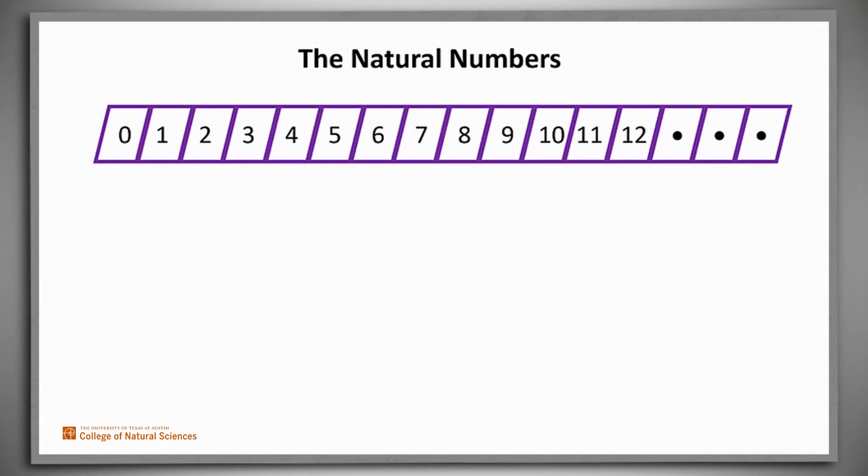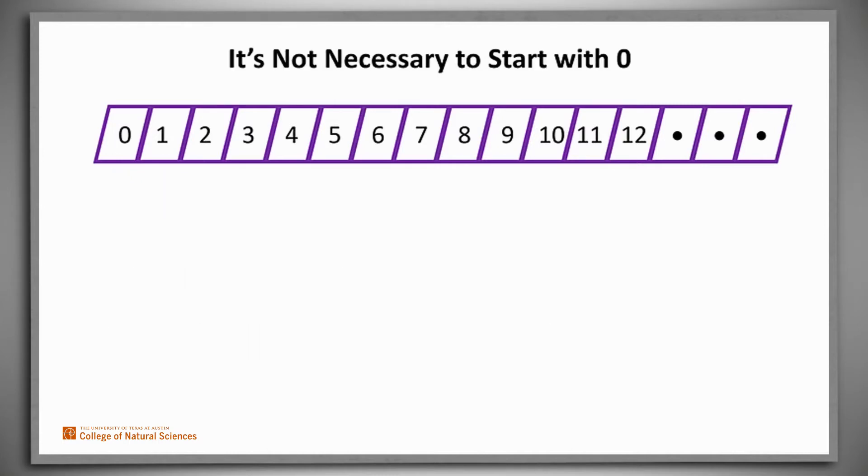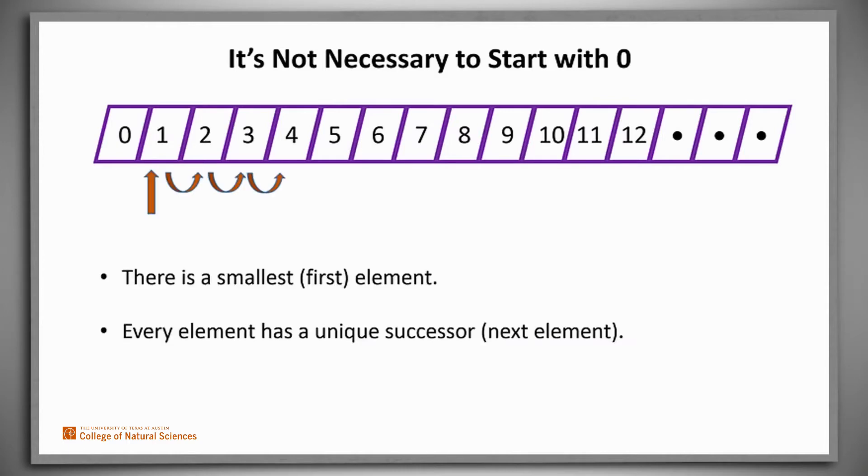The natural numbers are also such a set. There's a smallest, first element, zero, and every element has a unique successor. By the way, we also get a set with both required properties if we start someplace other than zero. For example, we'll see that it's often useful to start with one, to use just the positive integers.